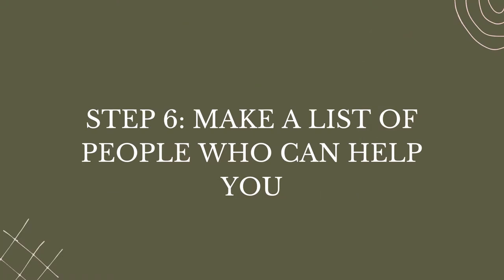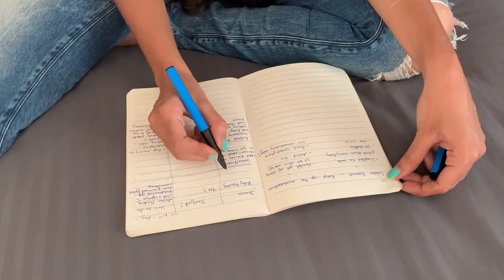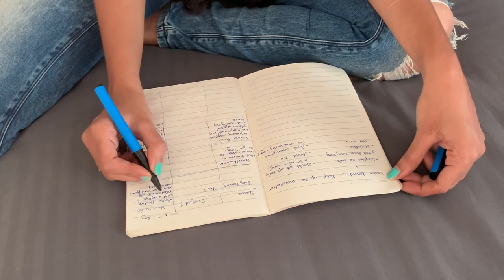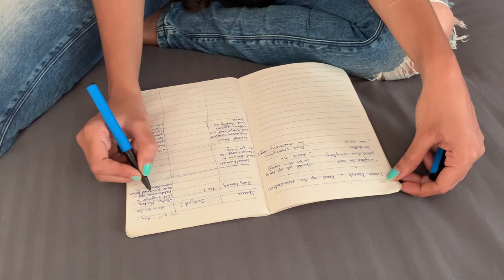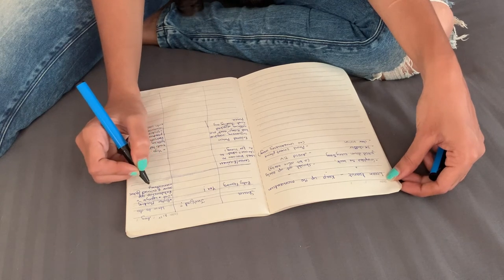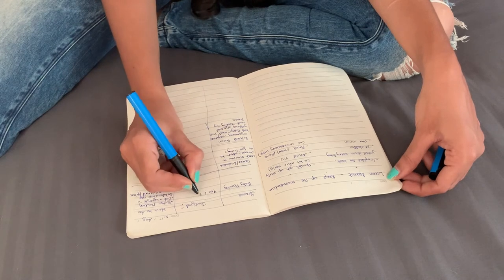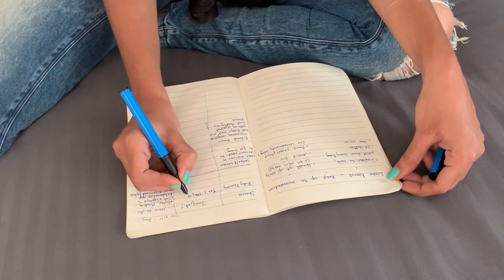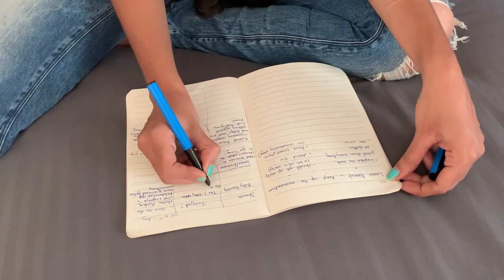Step six: make a list of people who can help you. You probably won't be able to make it without at least a little help. Include in this list people who can connect you with others, inspire you, give you advice, or even cheer you on. Whatever help you can get, take it. You can also make a list of books you'll need to read or courses you'll need to attend in order to reach your goals faster.